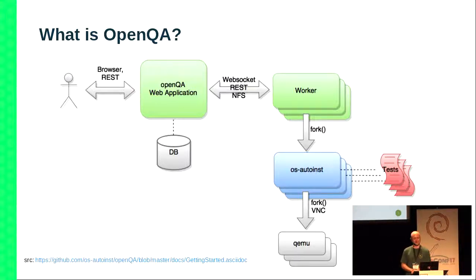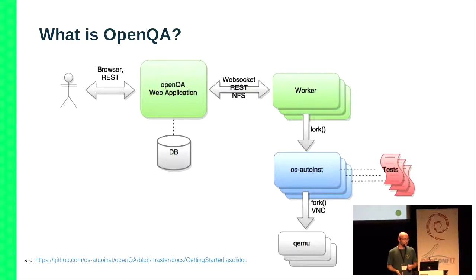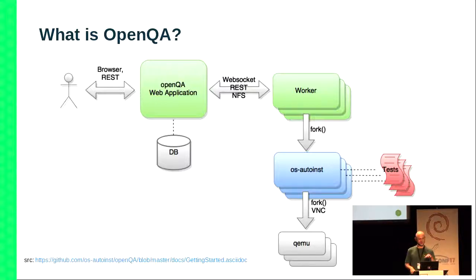The web application manages the state with a database. It communicates with the worker via a WebSocket REST API. It has things like screenshots for matching, stored on something like an NFS filesystem. The user who is monitoring whether the tests are working correctly uses the OpenQA web interface — you see everything green, the world is nice, and you don't have to worry. And once something actually stops working, that's when it gets interesting.